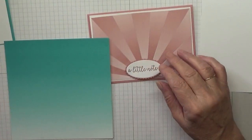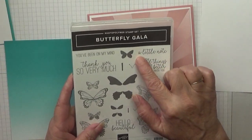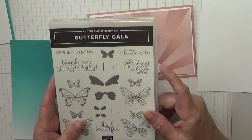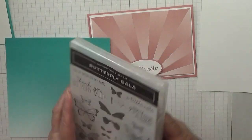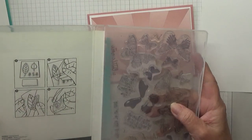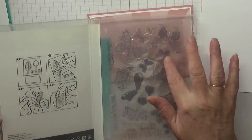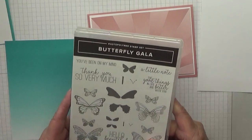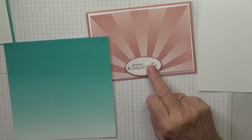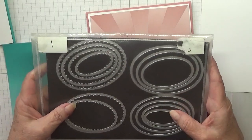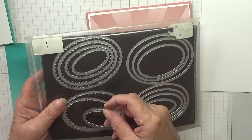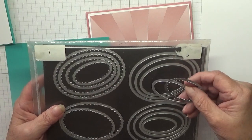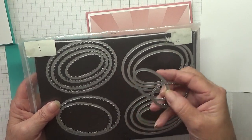For the sentiment I'm using the stamp set Butterfly Gala and just using that little note, because this is a notecard. And this is retiring, so I can't believe that. I mean, half the stamps I haven't used. That's the way it goes. And for the sentiment I'm using the oval dies, these two. From the center it's the second one and the second scalloped.